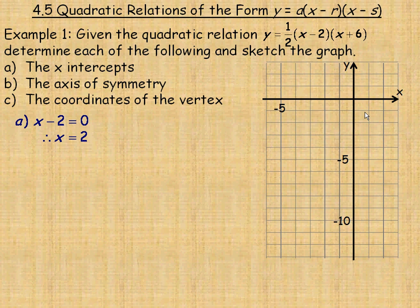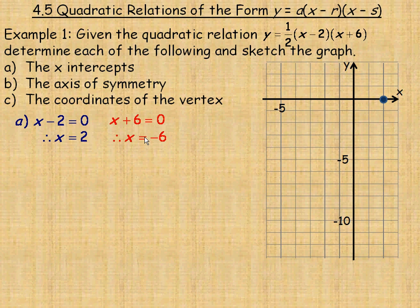x equals 2 is the point right here where the y-value is 0. Substituting x equals 2 gives one-half times 0 times 8, which is still 0, confirming the y-coordinate is 0 there. The other intercept is found by setting x plus 6 equal to 0, giving x equals negative 6. So negative 6 is the other x-intercept.